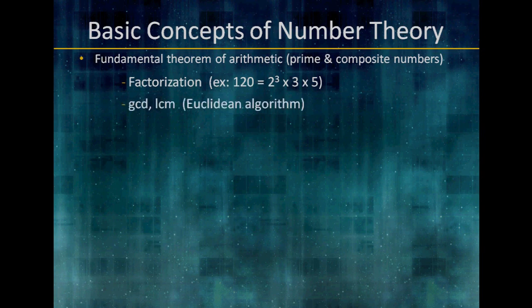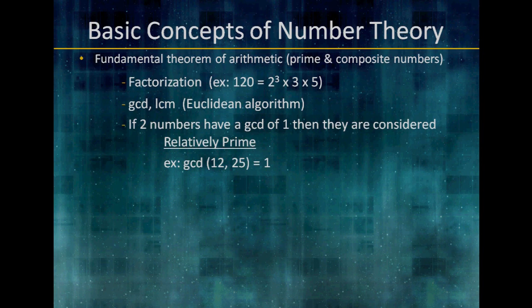Another concept we need to know about is greatest common divisor and least common multiple. We're going to be going over the Euclidean algorithm for finding the GCD, and we're going to find out that to find the LCM is pretty easy once we know the GCD. If two numbers have a GCD of 1, then they are considered relatively prime. For example, GCD of 12 and 25 equals 1, meaning they have no common numbers that divide them besides 1.